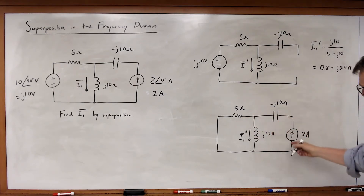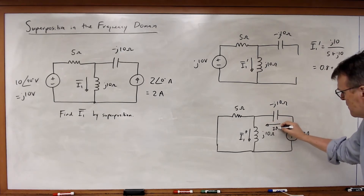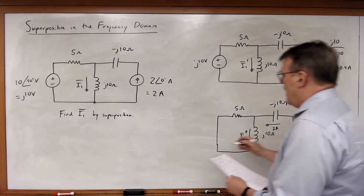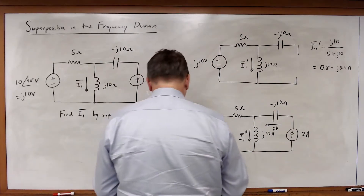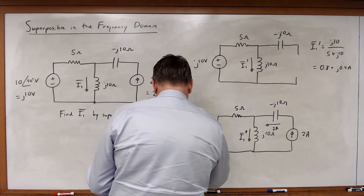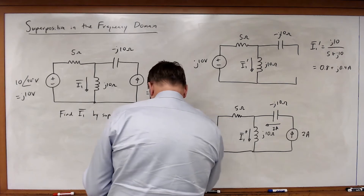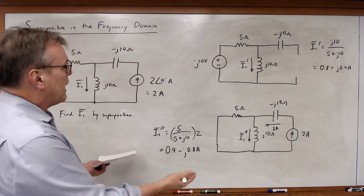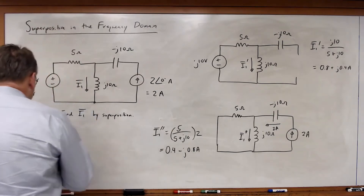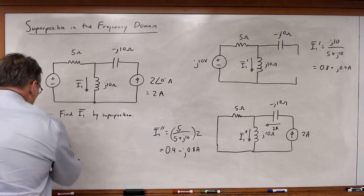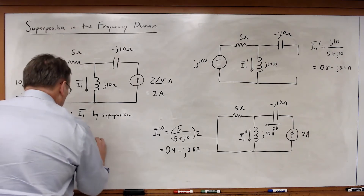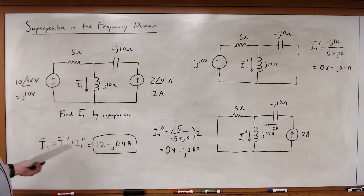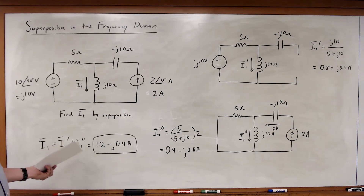Down here, this is 2 amps flowing through the capacitor, which then gets split up by current division. I1 double prime will be equal to 5 over (5 plus J10) times 2, which equals 0.4 minus J0.8 amps. Adding those two components together, I1 equals I1 prime plus I1 double prime, which equals 1.2 minus J0.4 amps.